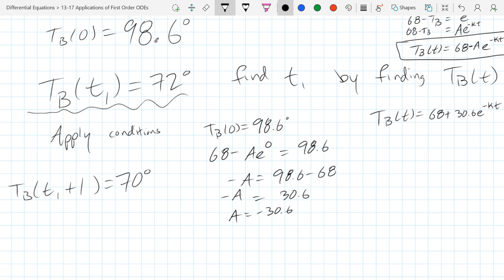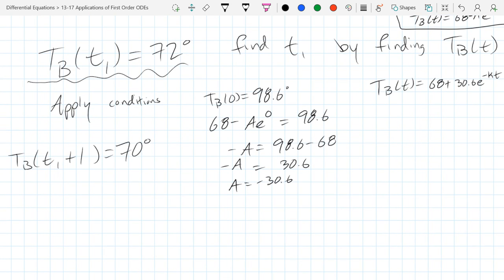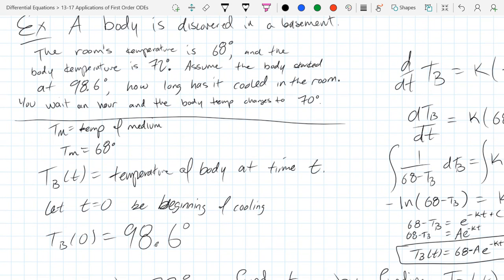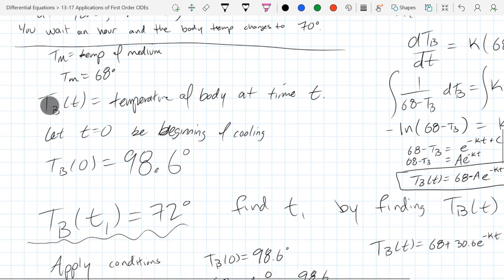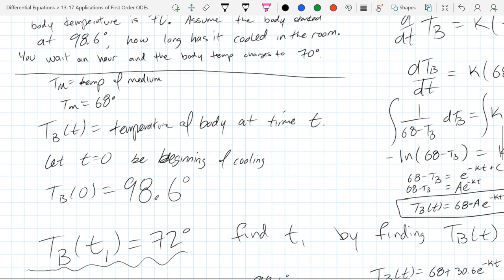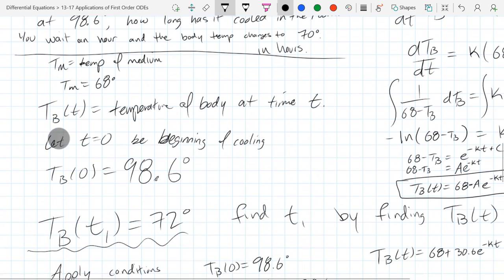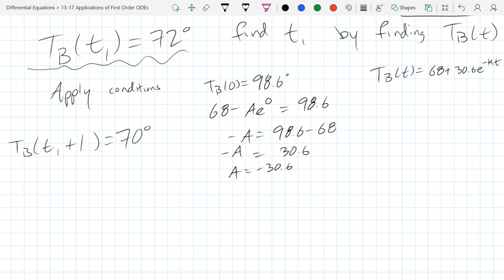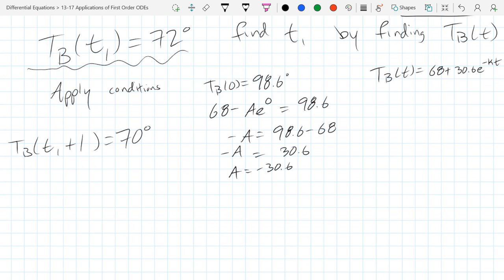We don't really have another initial condition, unfortunately. So I need to make up another condition. So let's say you hang around and wait for another hour and the body is 70 degrees. So you discover it, it's 72 and you wait another hour and it's 70. So I'm going to add another condition to the problem. So that is a condition that's related to time one. TB of t1 plus 1 equals 70 degrees. So there's our other condition. So now we should be able to figure out what t1 is from this information. So let's assume we're in hours. All right, so we'll come back to this problem.